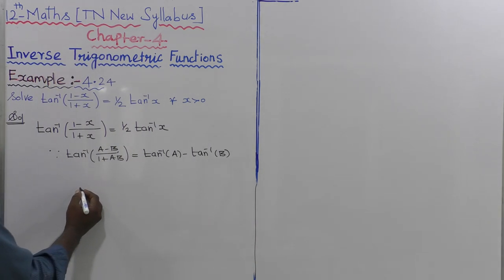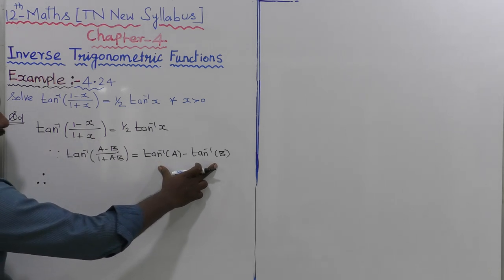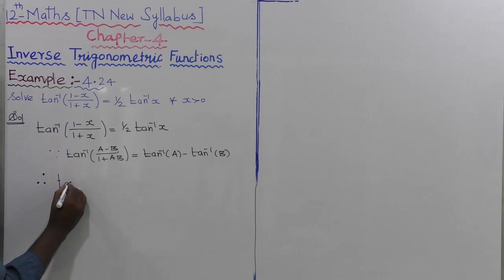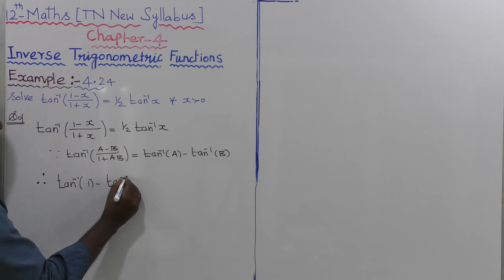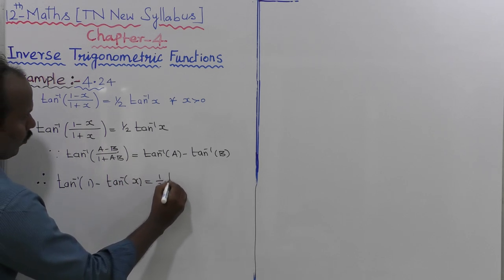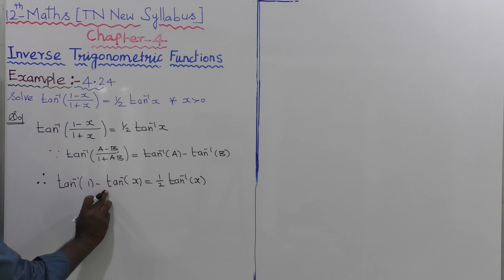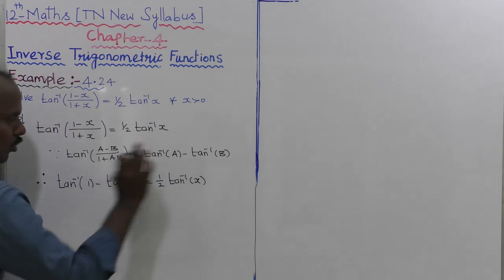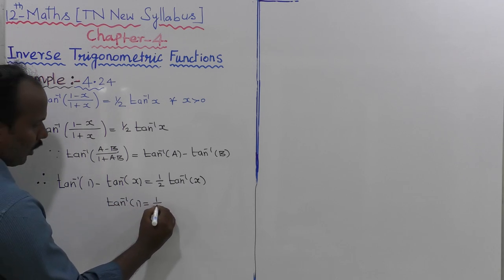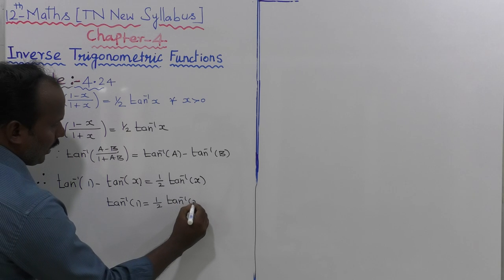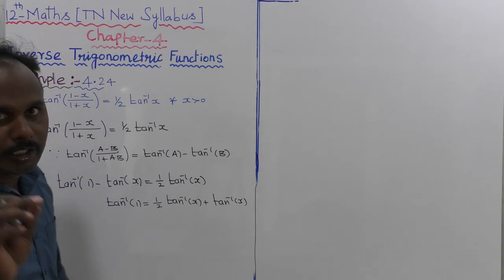Substituting into the formula, tan inverse of 1 minus tan inverse of x is equal to 1 by 2 into tan inverse of x. Moving tan inverse of x to the right side, we get tan inverse of 1 equals 1 by 2 into tan inverse of x plus tan inverse of x.